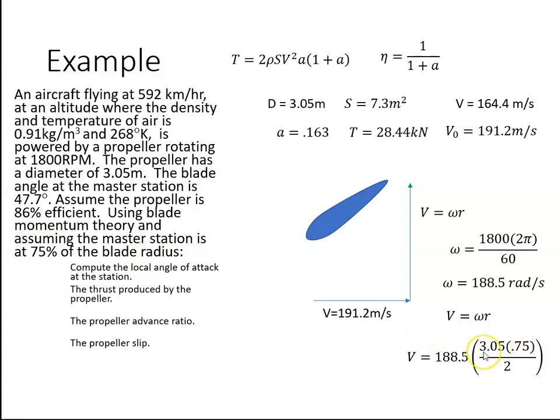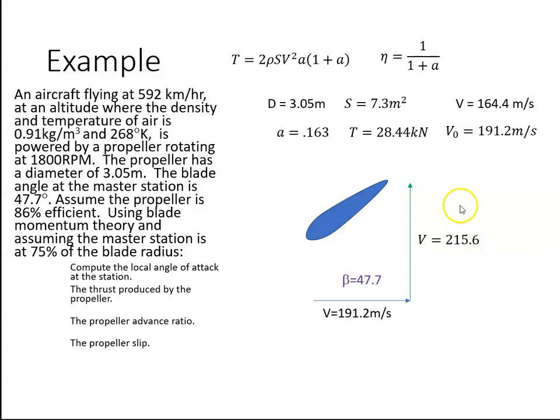So ωR is 188.5 times—all of this happened at the master station, and the master station is 75% of the radius. The radius is 3.05 divided by 2, and then at the master station it's 75% of that, so I multiply by 0.75. We get a velocity of 215.6 meters per second. So this is 215.6 meters per second, and this is 191 meters per second. The blade angle from there to the plane of rotation we're told is 47.7 degrees, given at the master station.